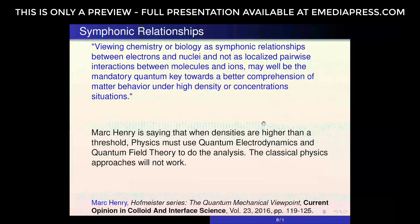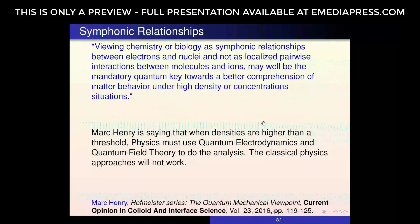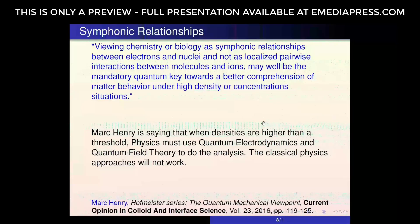The paper ends with this paragraph, which is very strange to find in an academic physics paper. It states: viewing chemistry or biology as symphonic relationships between electrons and nuclei — and not as localized pairwise interactions between molecules and ions — may well be the mandatory quantum key towards a better comprehension of matter behavior under high density or concentration situations. He's telling classical physics people that if you try to solve this by interacting pairs of electrons, it will not work, and the paper provides an example to demonstrate this.